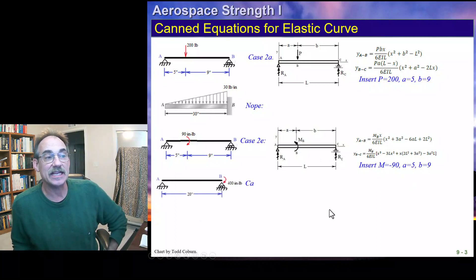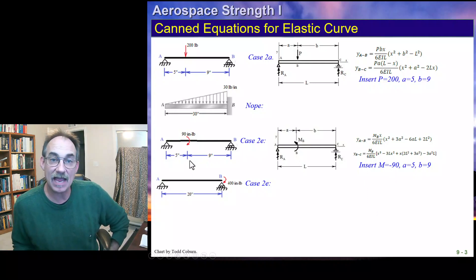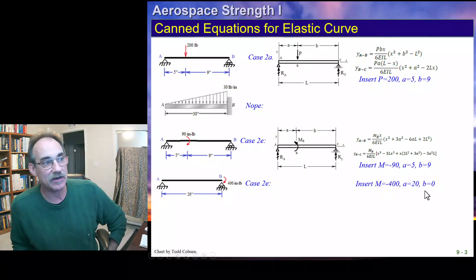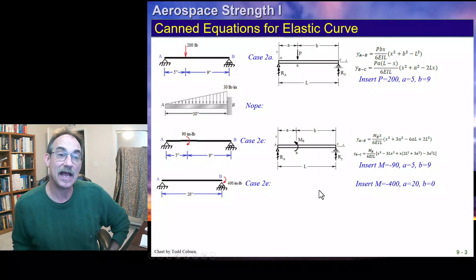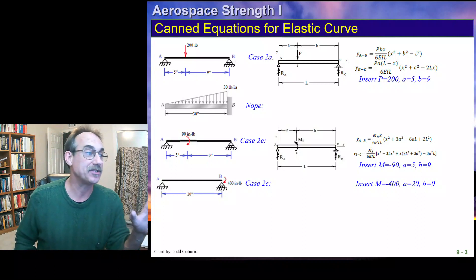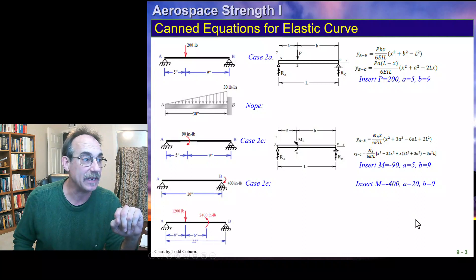If we have this case, we find this is just Case 2E as well. Except now, instead of placing that moment at 5 inches, we now place it at 20 inches, and our B dimension now is 0, but the same case still applies. Some folks might not recognize that. With a little bit of experience, you'll start noticing that some of these parameters can be manipulated along the beam, and some can't.